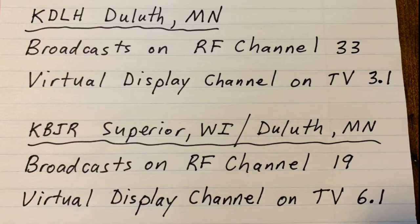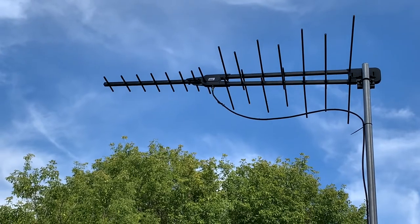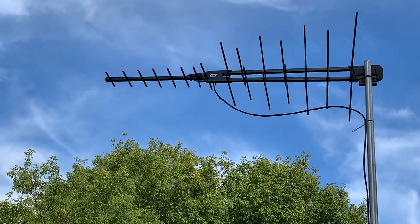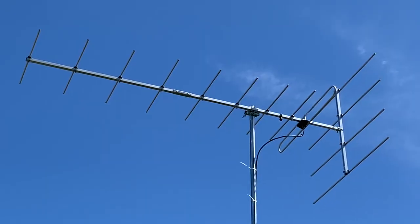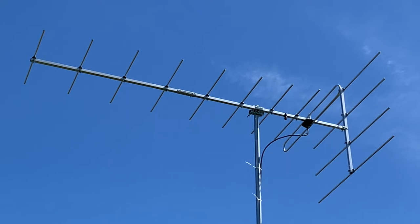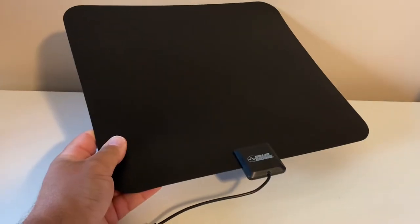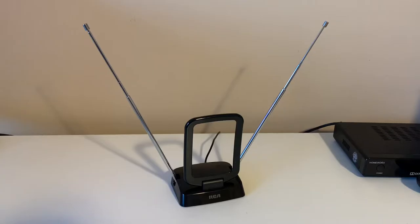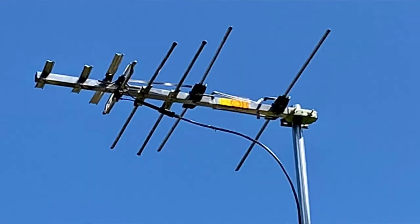Let's take the examples of KDLH and KBJR. If you simply chose a TV antenna based on the display channels you see on your TV, in this instance that could lead someone to believe they need a large outdoor antenna to receive these two stations on channels 3 and 6. But in reality, because they broadcast on channels 33 and 19 respectively, they can probably be picked up with a small indoor antenna like this.